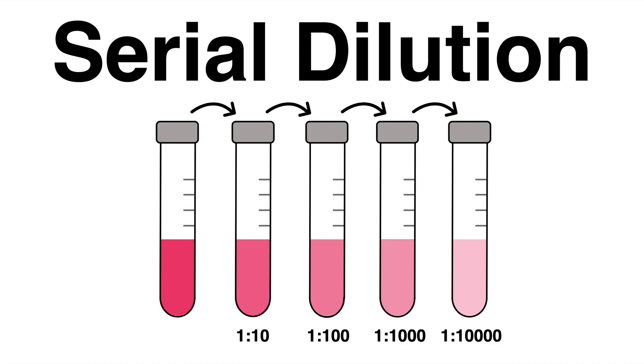Many techniques and assays in the lab require preparing a serial dilution. Whether it is for determining protein concentration or to gradually decrease the cell count of a solution, a serial dilution is nothing more than a step-wise dilution by a constant dilution factor.